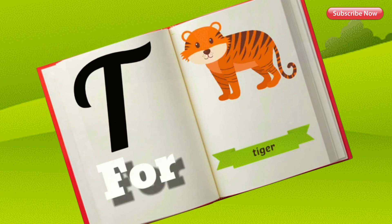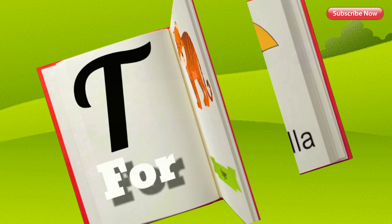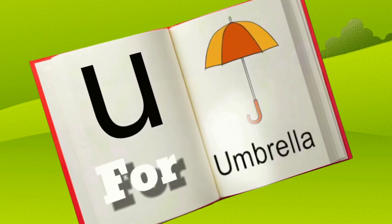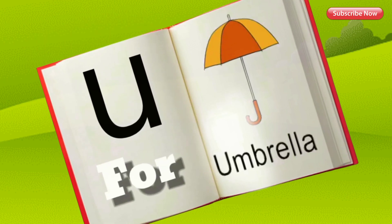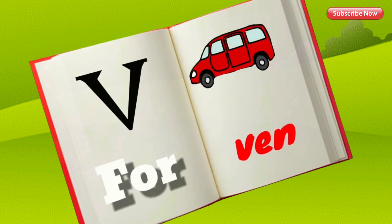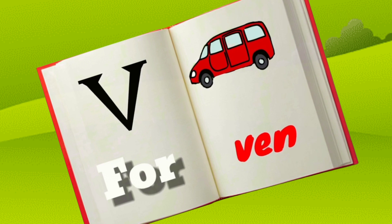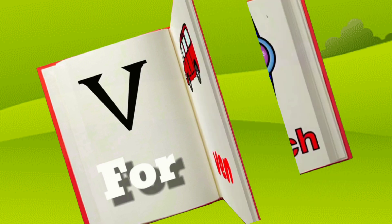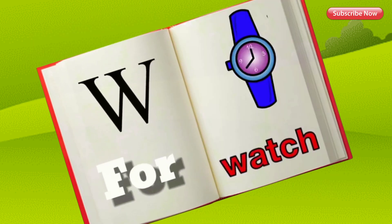T for tiger. U for umbrella. V for whale. W for watch.